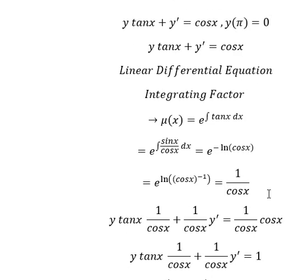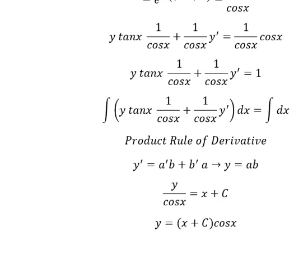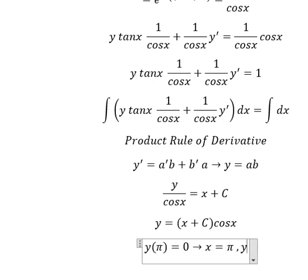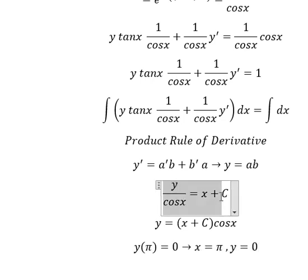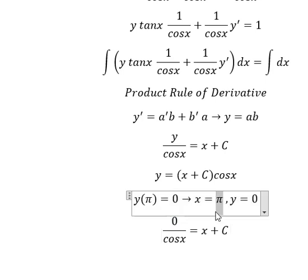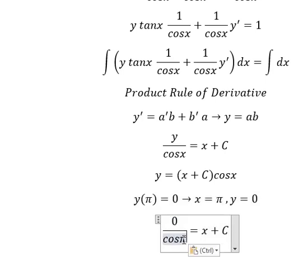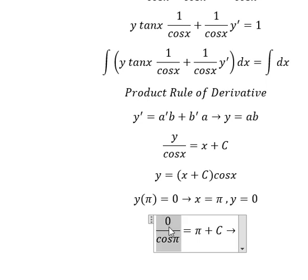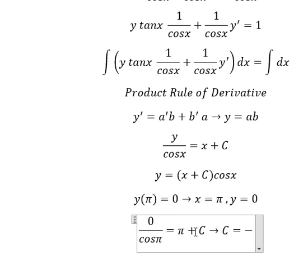Next we apply the initial conditions. When x equals π, y equals zero. I will use this condition to find the value of C. Substituting zero for y and π in the equation gives zero, so moving π to the left side gives C equals negative π.